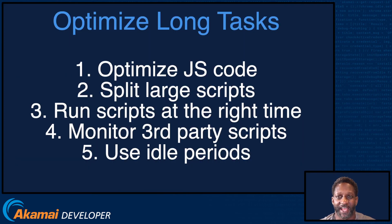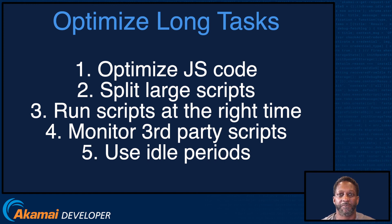Let's talk about a few ways to optimize long tasks and improve the user experience. First, the JavaScript you write is nothing like the code that's actually executed — modern browsers use JIT compilers and various optimization techniques, so use the DevTools Profiler to understand how your JavaScript is executing. Second, large scripts are often a major cause of long tasks, so consider splitting them into smaller chunks that run within 50 milliseconds. Third, run scripts at the right time in the right place. Fourth, keep an eye on those third-party scripts — their long tasks can delay vital content from becoming interactive. Finally, evaluate your code in idle periods using Philip Walton's idle until urgent, a model for executing JavaScript during periods of idle CPU.